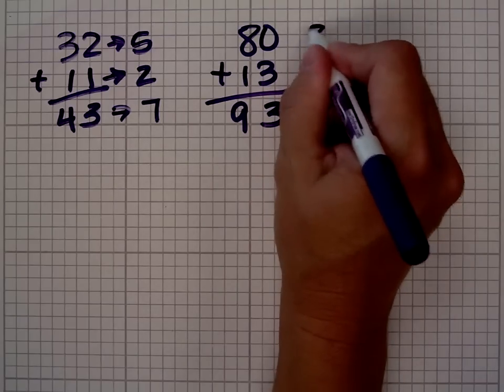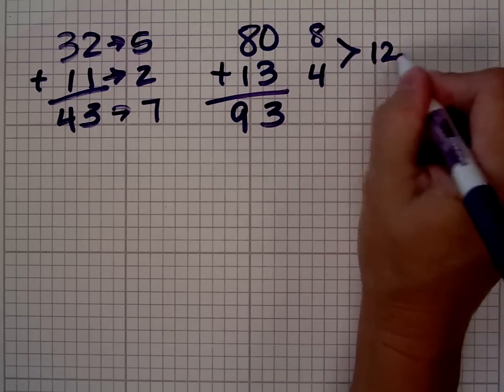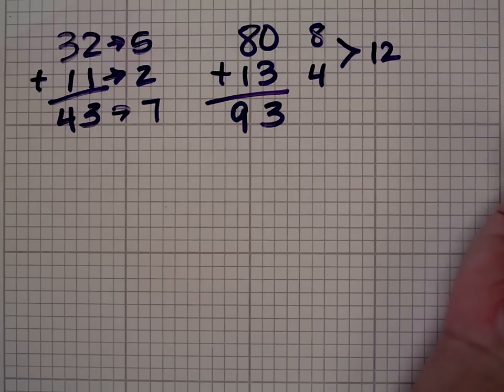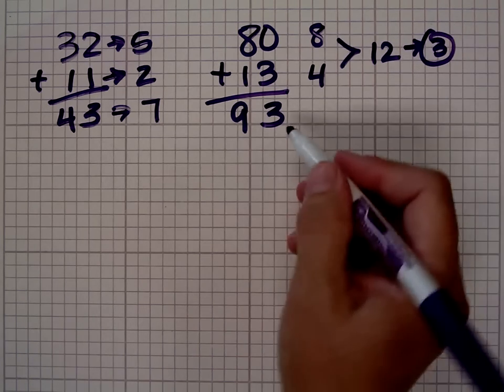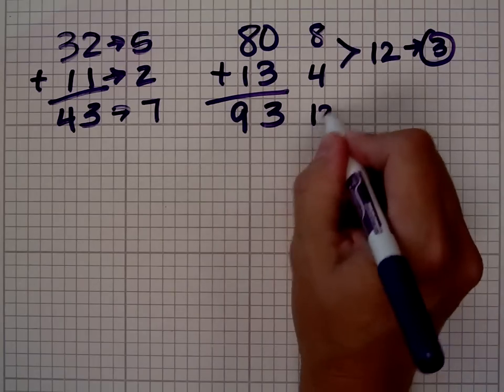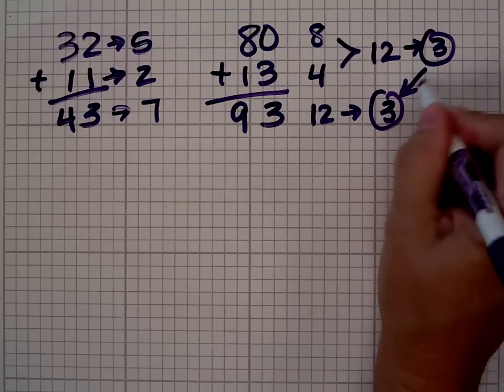The digital root of 80 is 8, the digital root of 13 is 4. When we add those together we get 12. We know digital roots have to be between 1 and 9, so the digital root for 12 is 3. What's the digital root of 93? 9 plus 3 is 12, 1 plus 2 is 3, so your digital roots match.